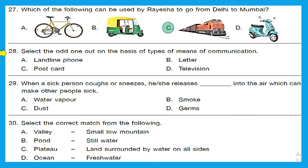Question 28: select the odd one out on the basis of means of communication — landline phone, letter, postcard, or television. Landline phone, letter, and postcard are means of personal communication, while television is a means of mass communication. So television is the odd one out; option D is the right answer.